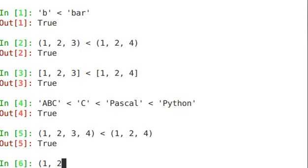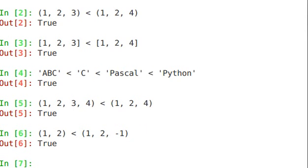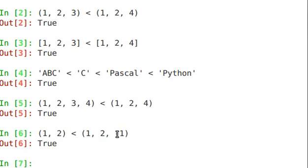Let's compare two tuples: (1, 2) is less than (1, 2, -1). It doesn't matter that the third item is negative — it still makes that tuple longer. An existent third item is greater than a non-existent third item in the first tuple.